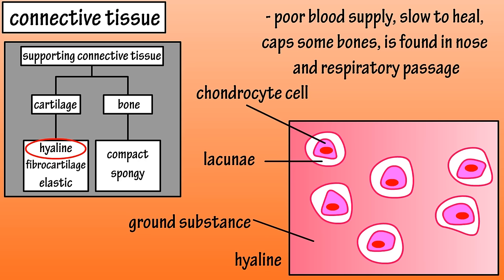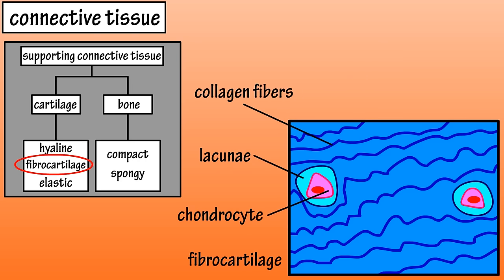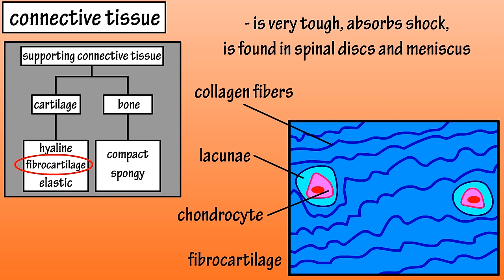Hyaline cartilage is the most common type of cartilage, and it caps the bones of synovial joints and is found in the nose and in the respiratory passage. Fibrocartilage consists of dense, wavy-looking collagen fibers, and it too has chondrocyte cells and lacunae. Fibrocartilage acts as a great shock absorber and is resistant to compression. It is the toughest form of cartilage, and it makes up the discs of the spine and the meniscus of the knee joint.